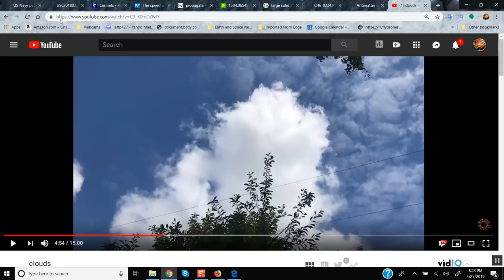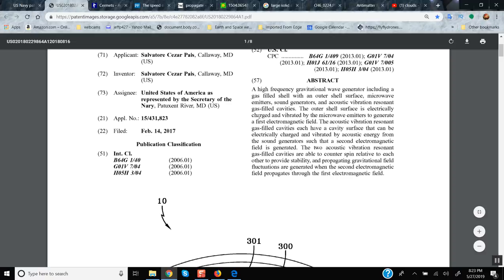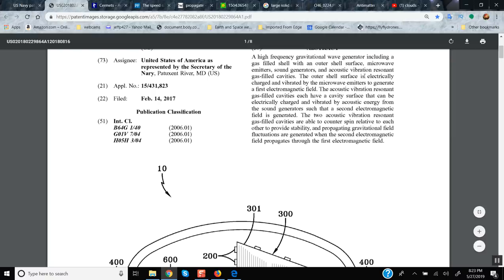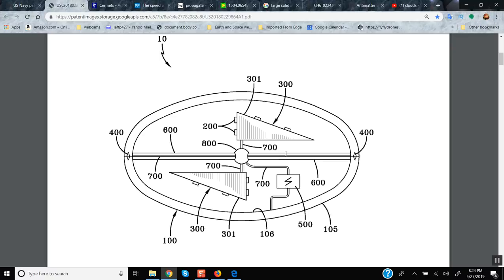All right, we had enough fun with that. Let's dive into the patent. This is the released patent here you go. United States Patent Application Publication, patent number US 2018 0229864 A1, published in 2018. I'm gonna read this: A high frequency gravitational wave generator including a gas-filled shell with an outer shell surface, microwave emitters, sound generators, and acoustic vibration resonant gas-filled cavities. The outer shell surface is electrically charged and vibrated by microwave emitters to generate the first electromagnetic field.